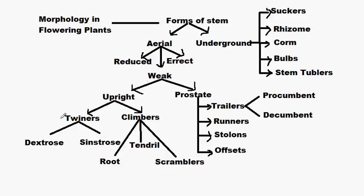The twiners can be classified into two types: the dextrose type and the sinistrose type. And the climbers can be classified into three types: root climbers, tendril climbers, and scramblers.